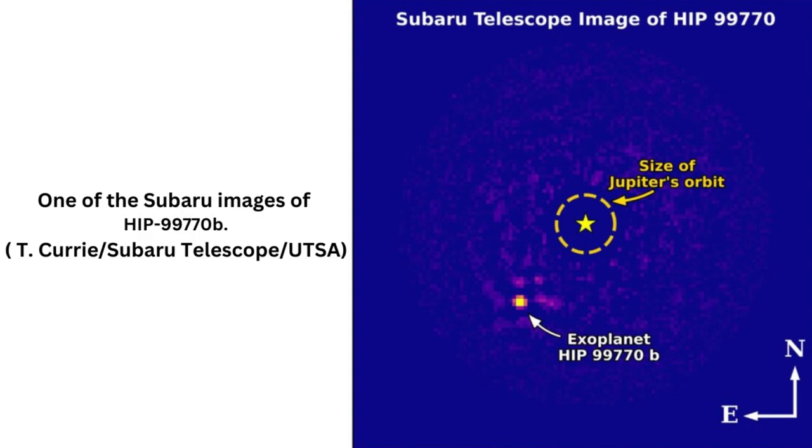Further research will no doubt probe the exoplanet further to see what else we can glean from direct imaging. Meanwhile, the researchers are continuing to observe and analyze the 50 or so candidate stars they identified in the Gaia Hipparcos data. HIP-99770B represents a proof of concept for their techniques, but they're not nearly done.